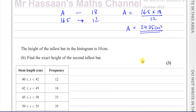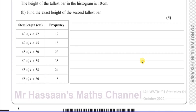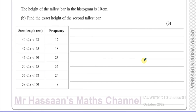For part B, it says the height of the tallest bar in the histogram is 10 centimetres — find the exact height of the second tallest bar. The height of the bars is determined by the frequency density. To find the frequency density, we take the frequencies and divide them by the class width. The one with the highest frequency density will have the highest height.